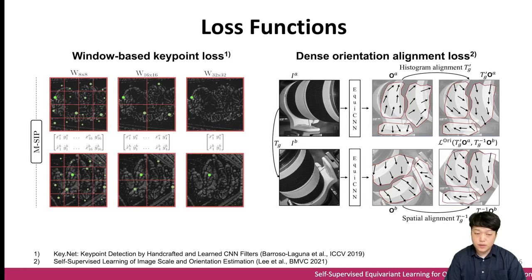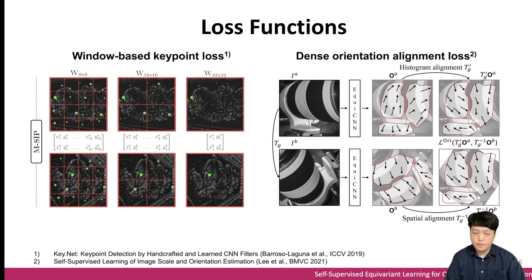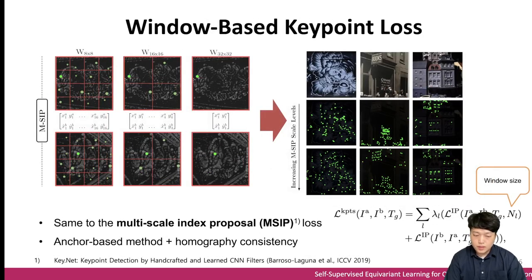We used two loss functions for training the oriented key point detector. The first is the window-based key point detection loss, which is the same as the multiscale index proposal loss in KeyNet. The second is the dense orientation alignment loss, which is an extended version of the histogram alignment loss in the referenced BMVC paper. The window-based key point loss divides the image into different sizes of windows. For technical details, please refer to the paper.